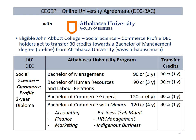Still talking about business programs, John Abbott College has recently reached a DEC-back agreement with Athabasca University. Students holding a DEC in Social Science Commerce profile who may wish to pursue online university studies in business may now get credited by Athabasca for up to 30 credits, equivalent to one year taken off any of the three- or four-year programs shown on the slide. Please reach out to your academic advisor or consult the Athabasca University website identified on the slide.